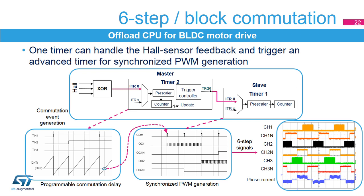The compare two match event is propagated to the slave timer through the TRGO output. These events serve as commutation events and trigger changes for PWM generation. For each of the six steps of the sequence, the states of the six outputs are defined to be either forced active or inactive or generating a PWM signal.